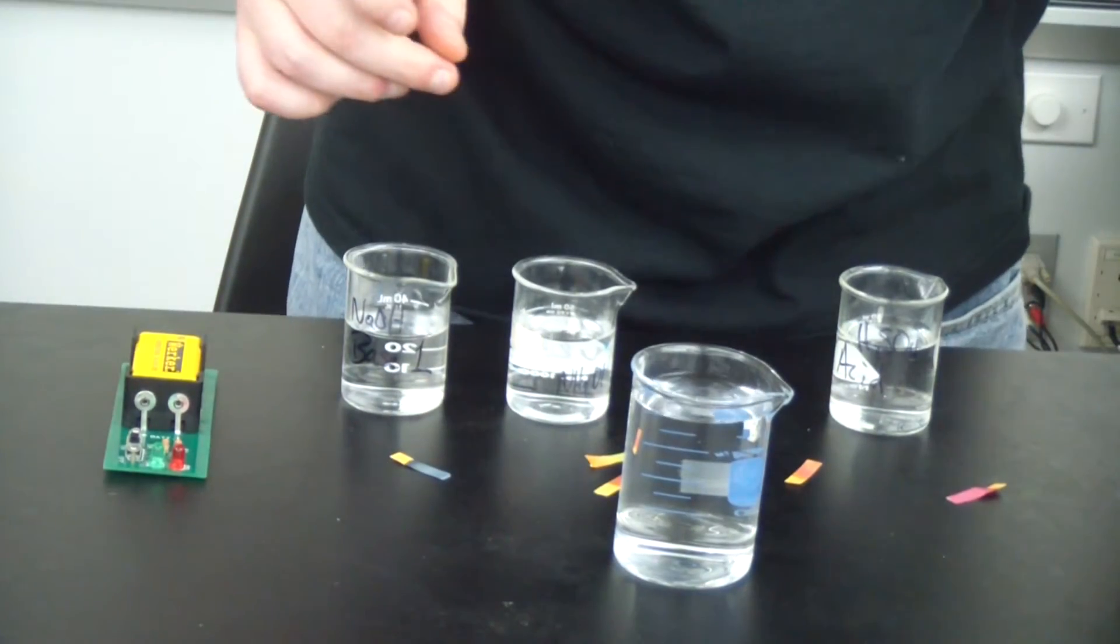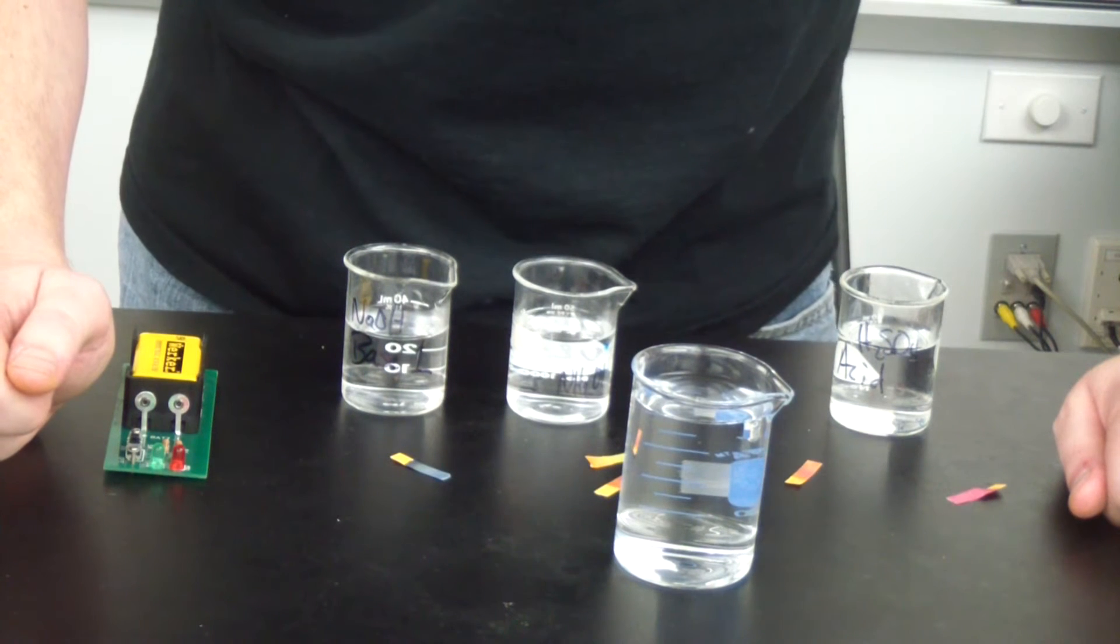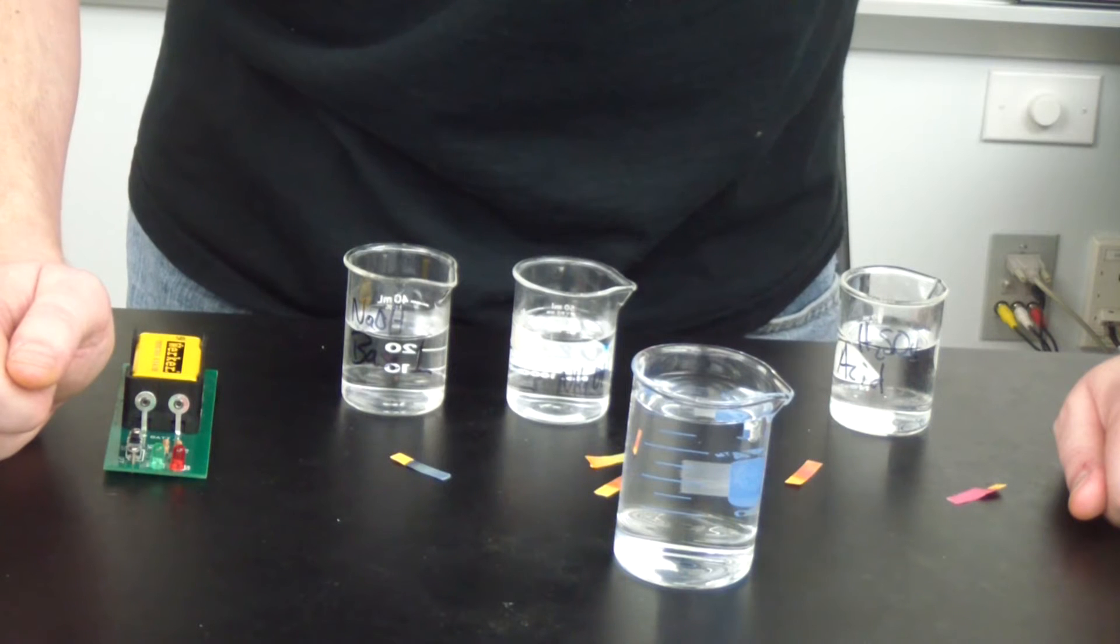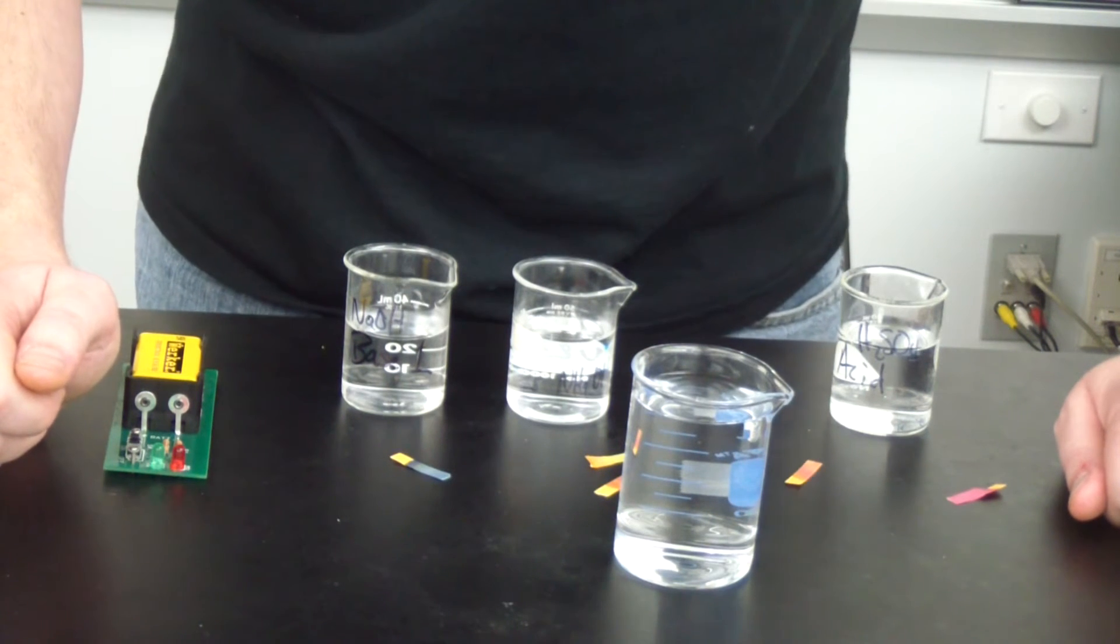Well, it tells us that pH is actually more of an indication of concentration rather than strength. So how exactly do we measure strength? Well, for that, I need to turn off the lights.